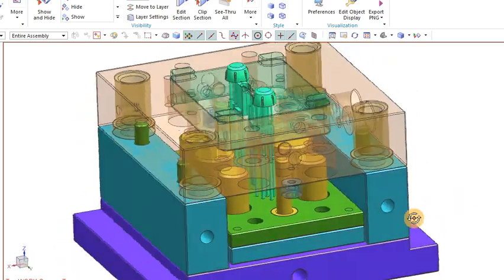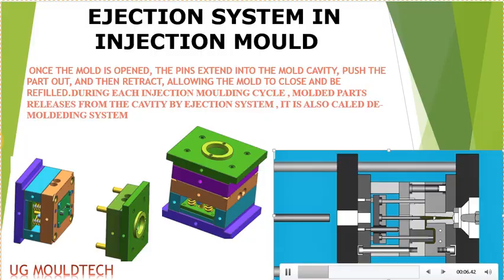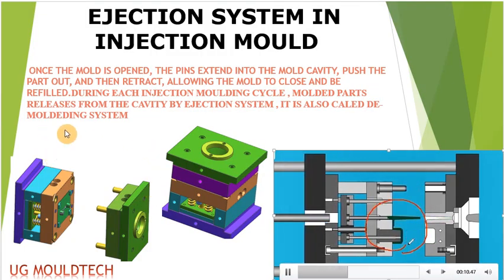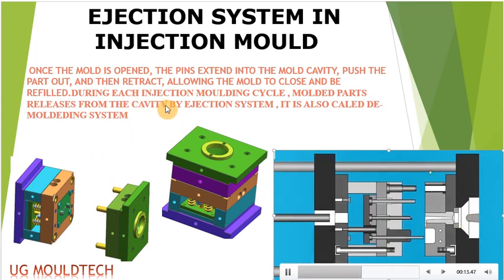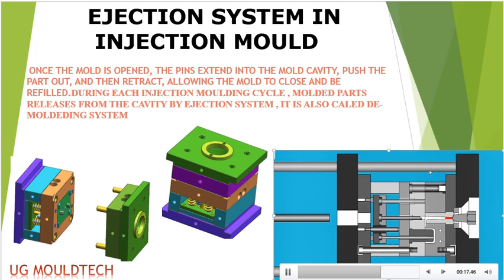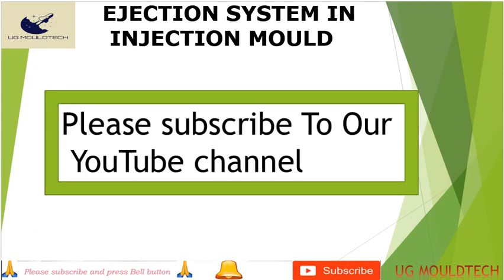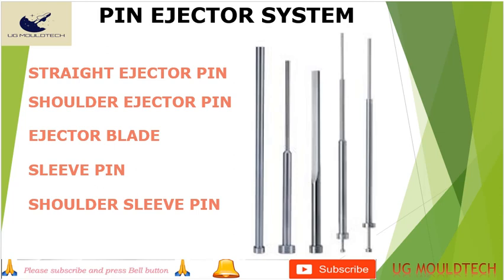This is our ejector grid system — you should all be clear about this. This is all about the ejector system for injection molding. Now we move on to the different pin ejector systems. The first is the straight pin, then the shoulder pin, ejector blade, and sleeve pin. These are the various types of ejector systems we have.